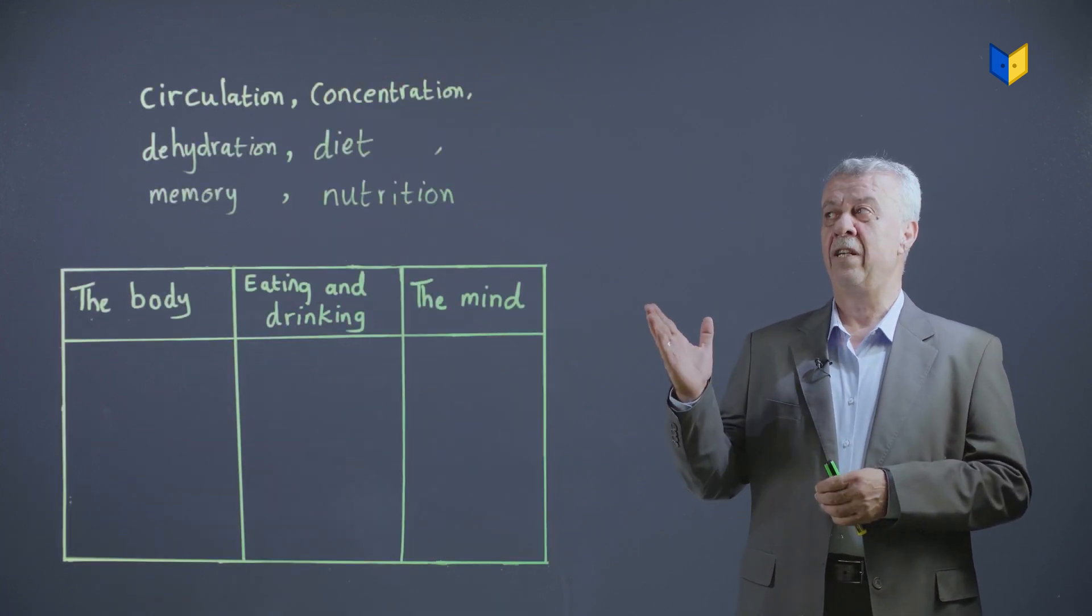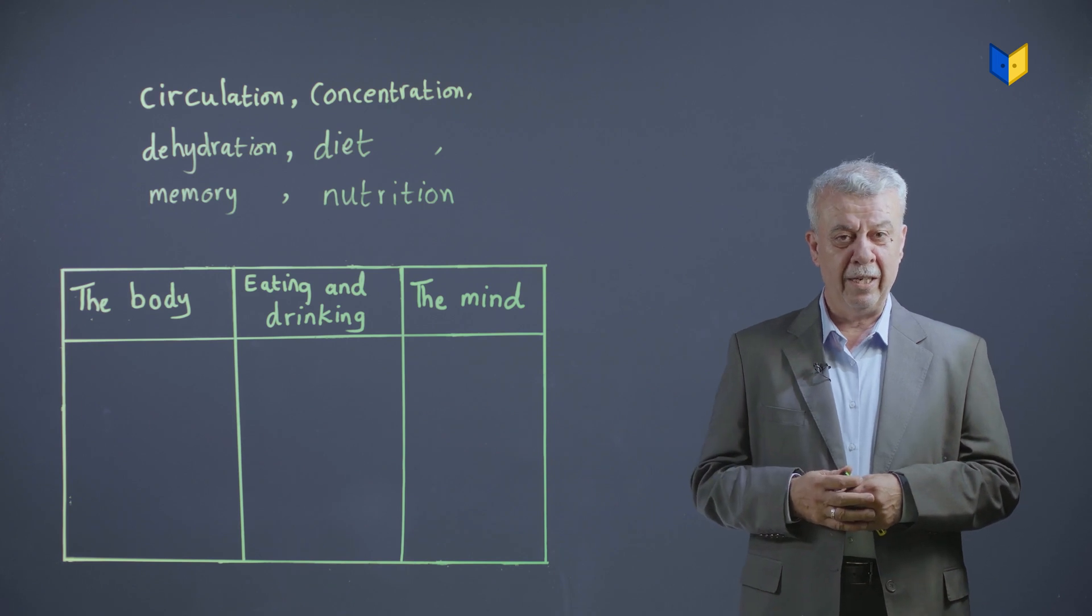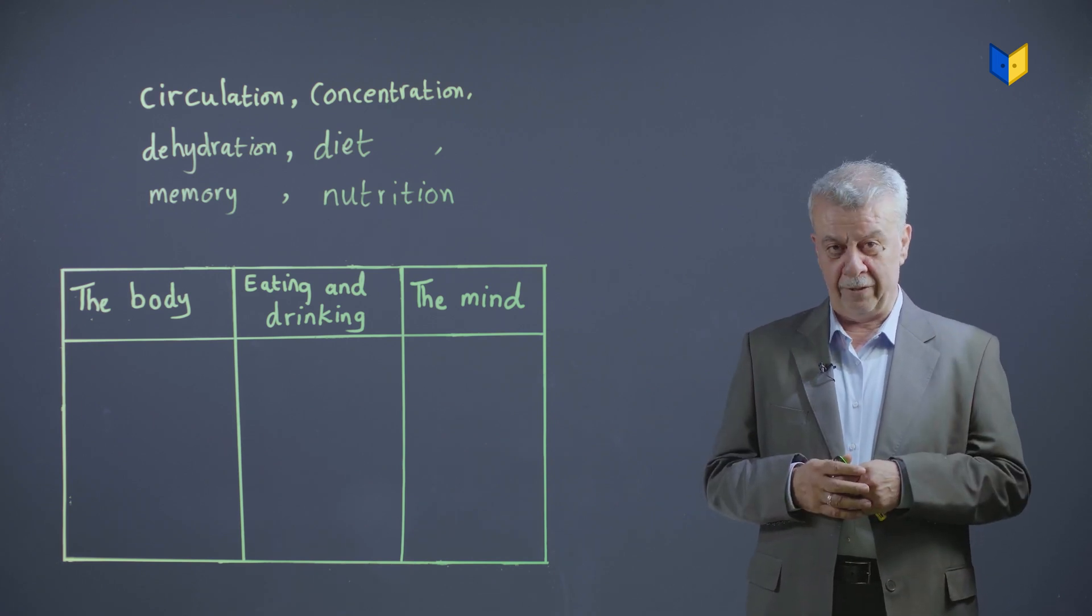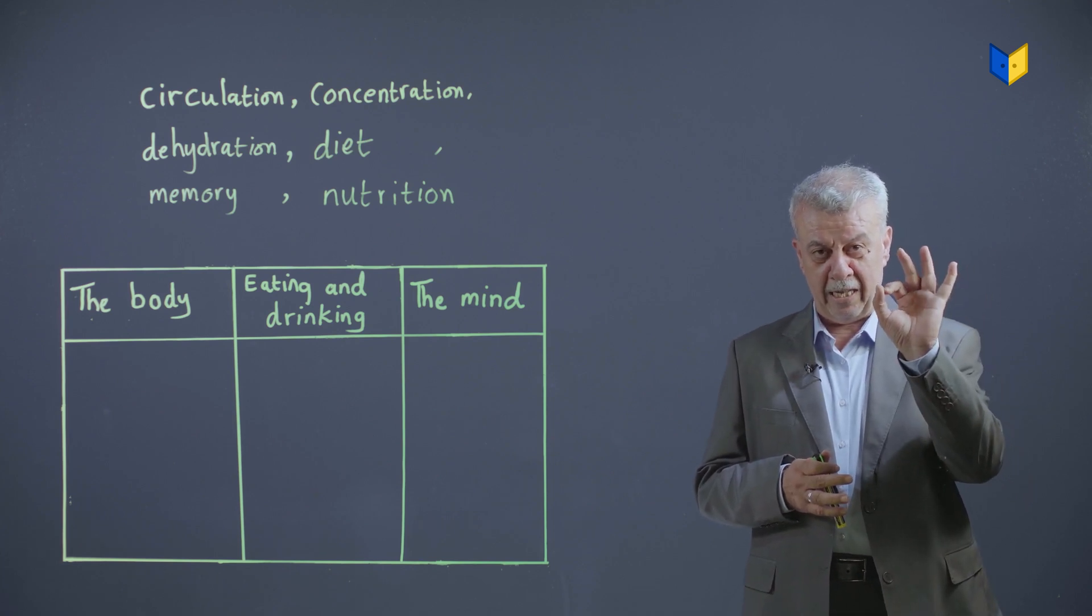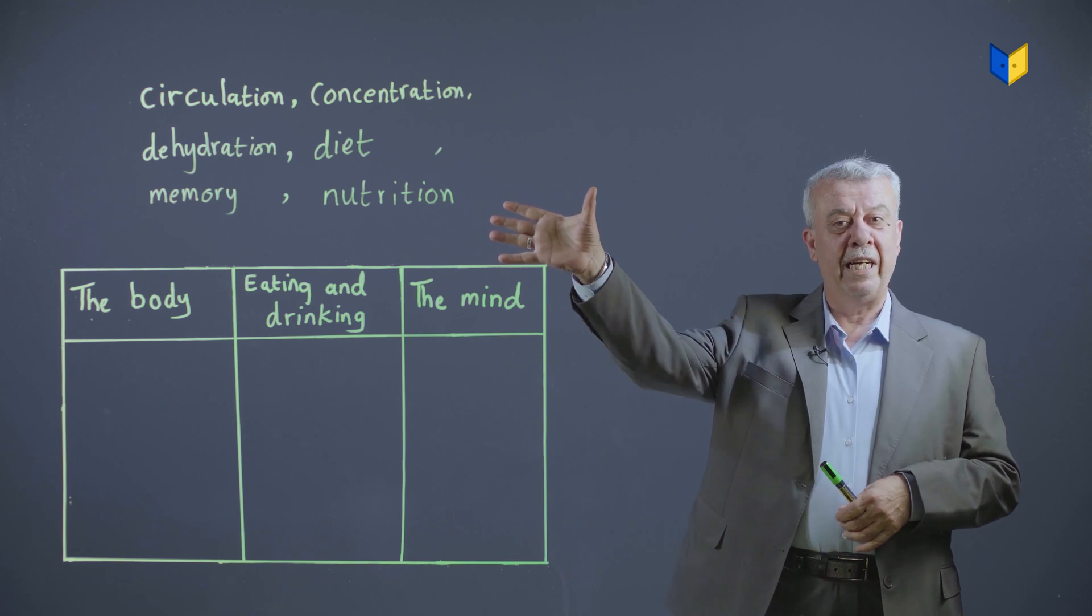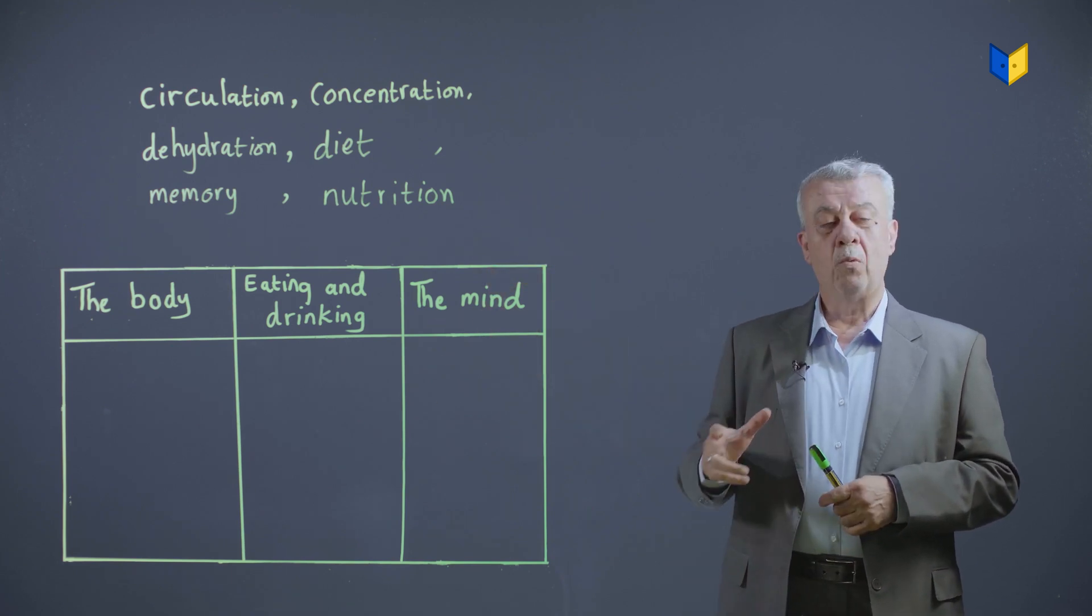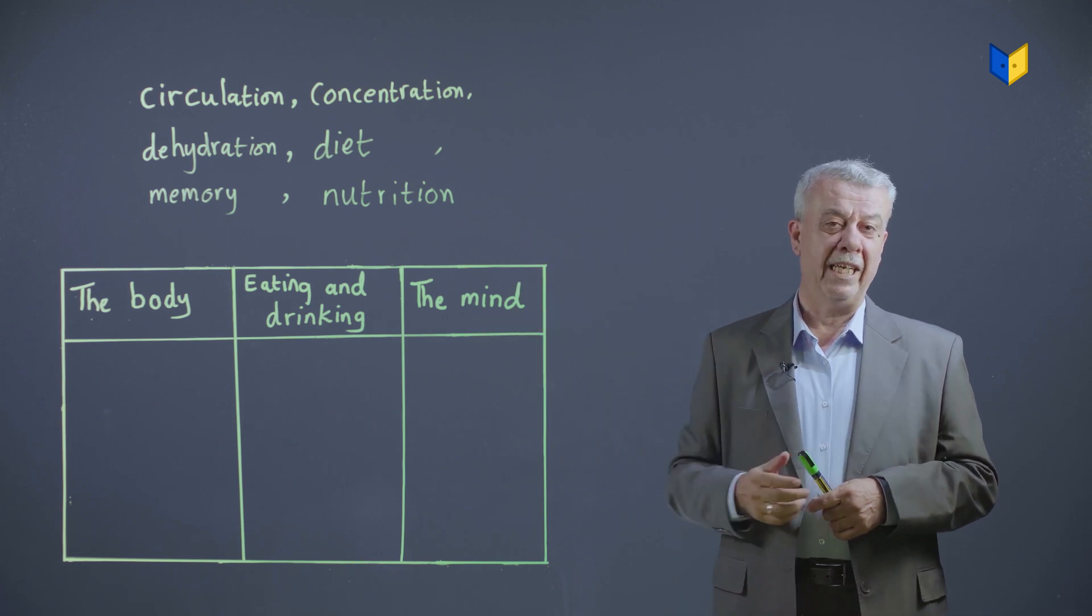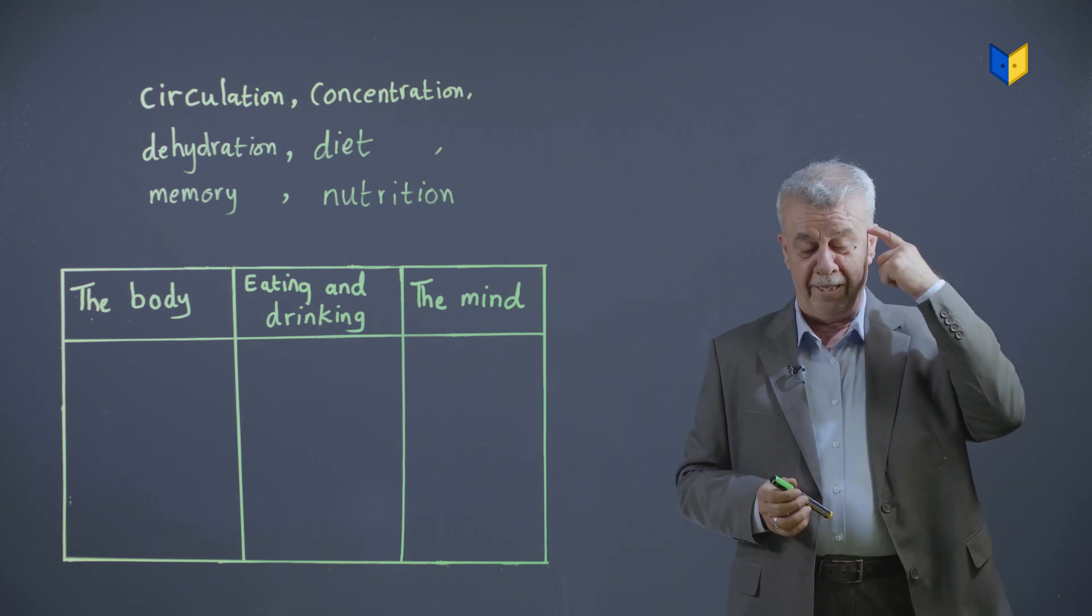Now, before we read the text, I want you to look at these vocabulary items here. I want you to divide them into three categories. Under the body, words that are connected with the body, words that are connected with eating and drinking, and words that are connected with the mind.